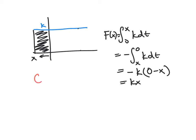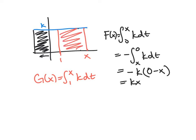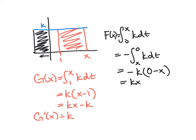What if we don't start at 0? If we take the area function starting at 1 instead, the width changes to x − 1, so the area function becomes G(x) = kx − k. What about the antiderivative connection? Since k is a constant, G'(x) is still k — this is also an antiderivative of f, just a different one than big F.